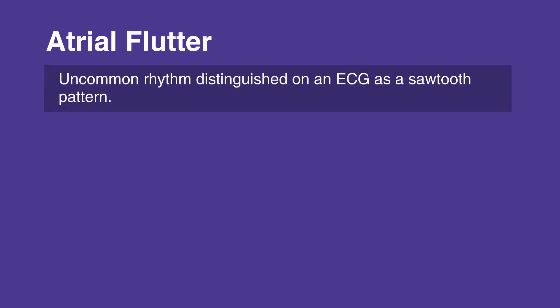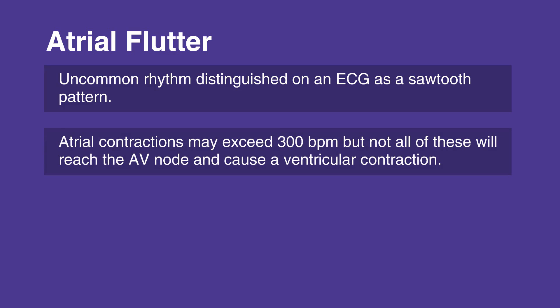Atrial flutter is an uncommon rhythm distinguished on an ECG as a sawtooth pattern. It is caused by an abnormal re-entrant pathway that causes the atria to beat very quickly and ineffectively. Atrial contractions may exceed 300 beats per minute, but not all of these will reach the AV node and cause a ventricular contraction.